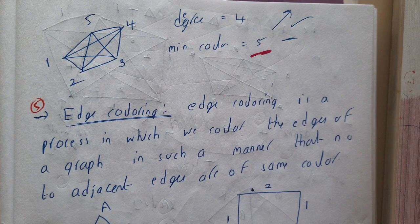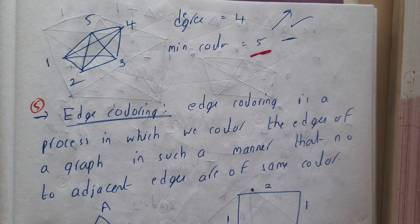I hope everyone got a clear idea about Brooks' theorem. In the next lecture, we'll be discussing edge coloring. Edge coloring and vertex coloring are almost the same, but in edge coloring we color the edges — that's the only difference. Let us meet in the next lecture and go through one or two examples with the definition.